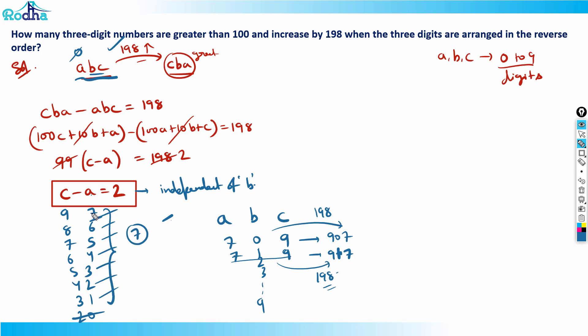So we have in one case ten numbers. If a is 7 and c is 9, then ten values of b are possible. Similarly, there are seven cases here, so total such numbers possible will be 7 times 10, which is 70. 70 is the answer for this question. Hope you got this right, thank you.